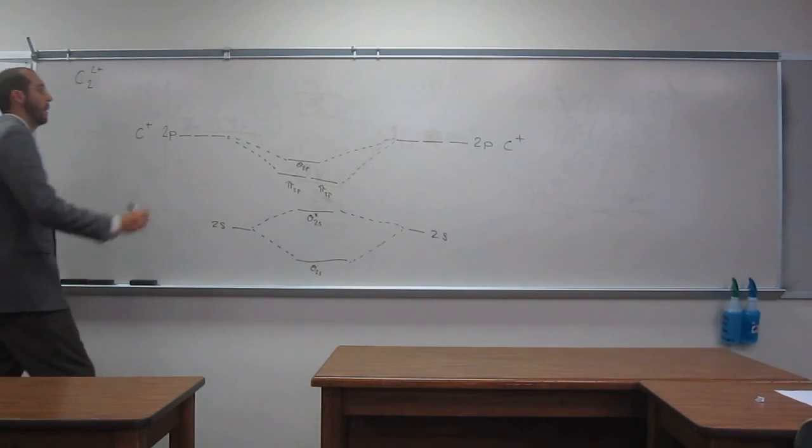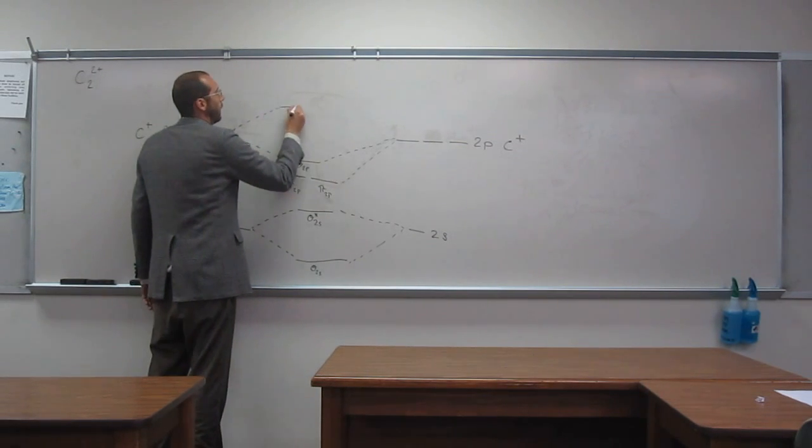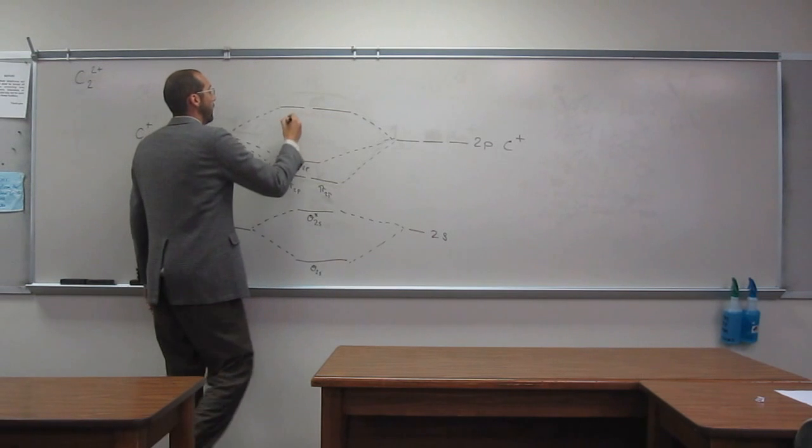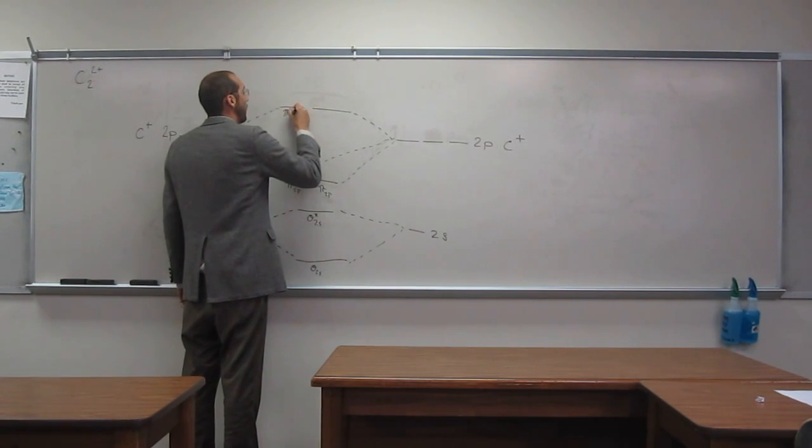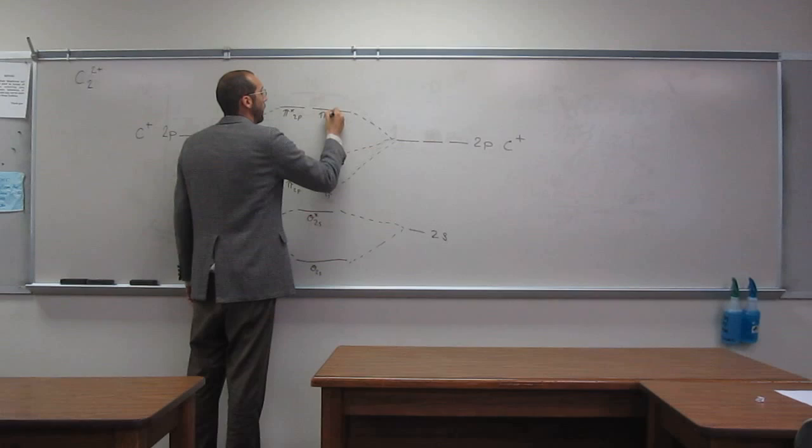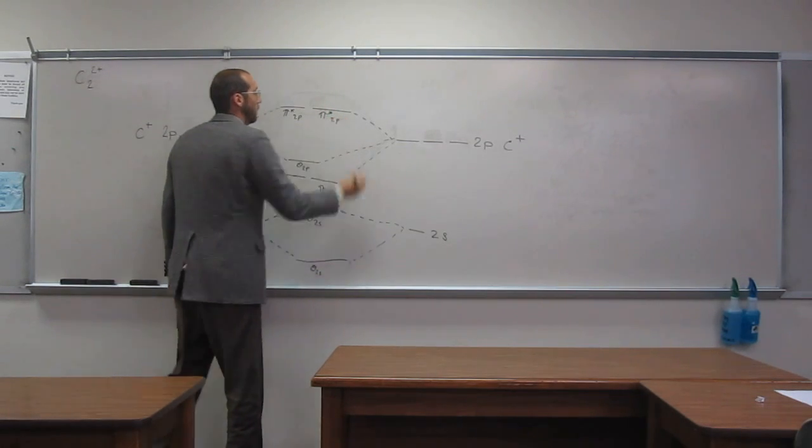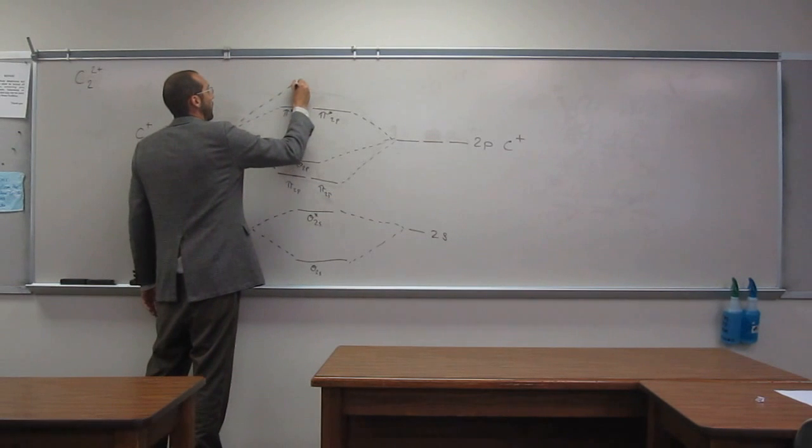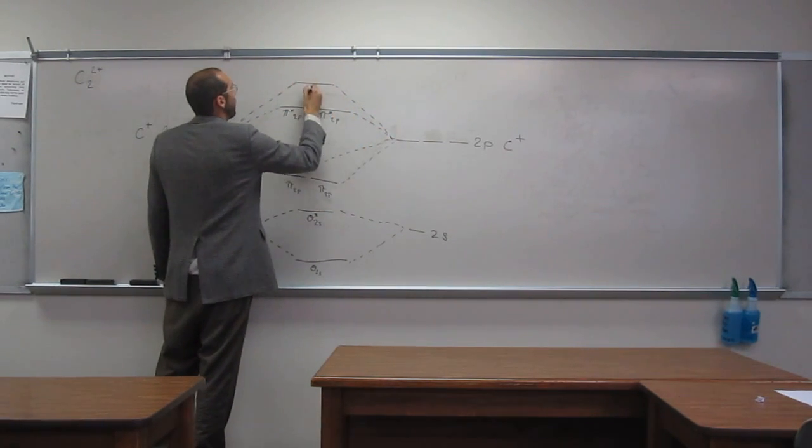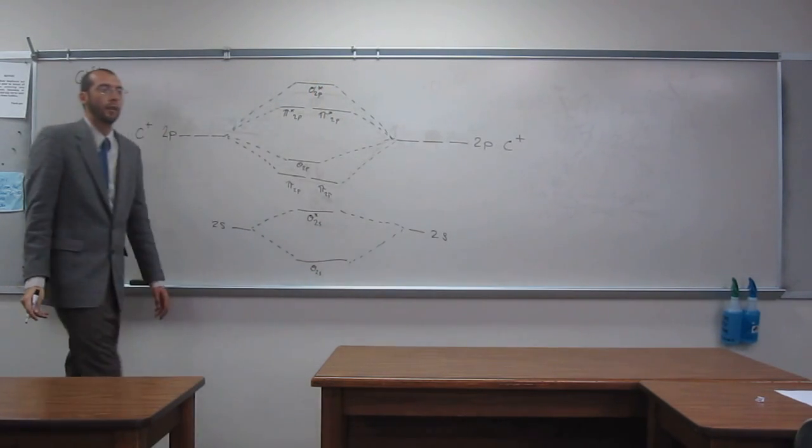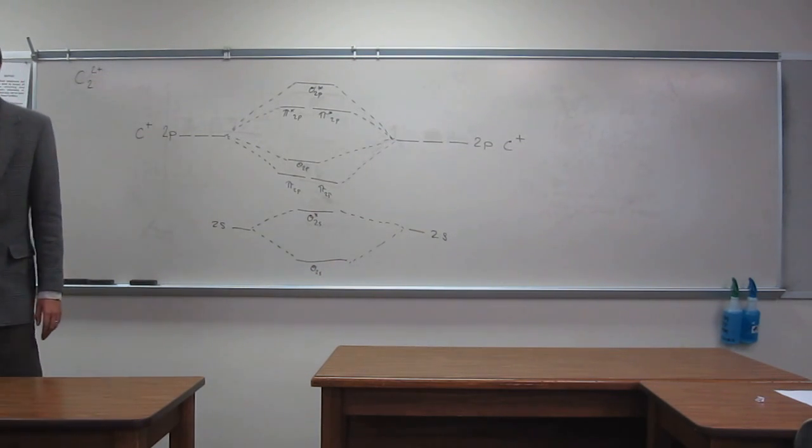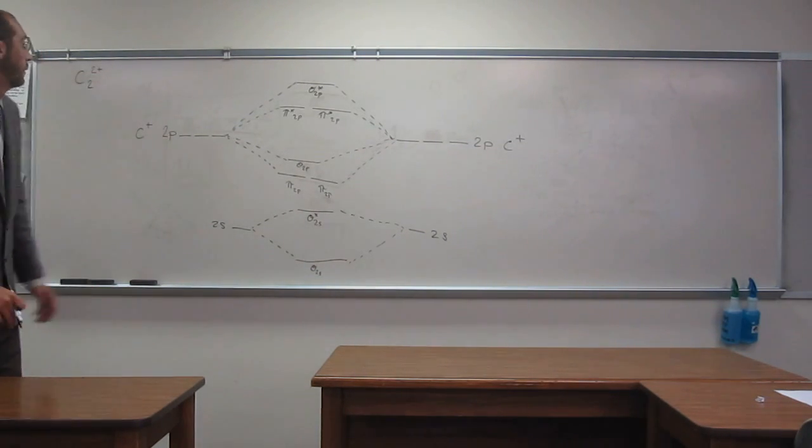Okay? Then, next, like that, this is the pi star 2p, pi star 2p, and at the very top, it's going to be the sigma star 2p. Okay, is everybody okay with drawing something like that? If you're not, you're going to have to memorize it.